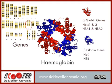The beta globin gene, also known as haemoglobin beta or HbB, is located on chromosome 11.